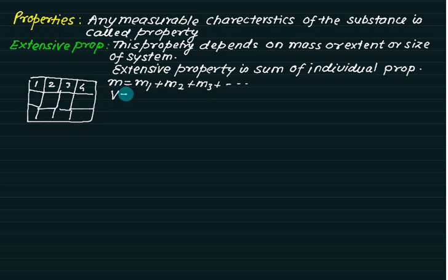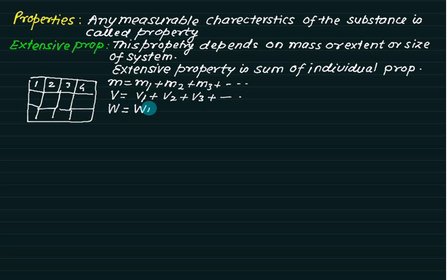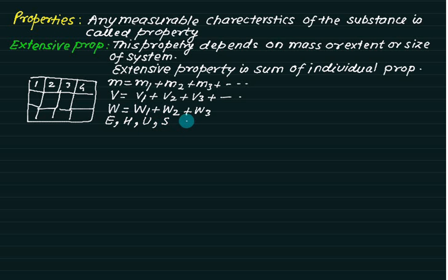Similarly, volume is also an extensive property because v1 plus v2 plus v3 and all volumes together equal the final total volume. Weight is also an extensive property because weight of part 1 plus weight of part 2 plus weight of part 3, and so on. Energy — whether enthalpy, internal energy, or entropy — all equal the sum of their individual properties, so these are all called extensive properties.